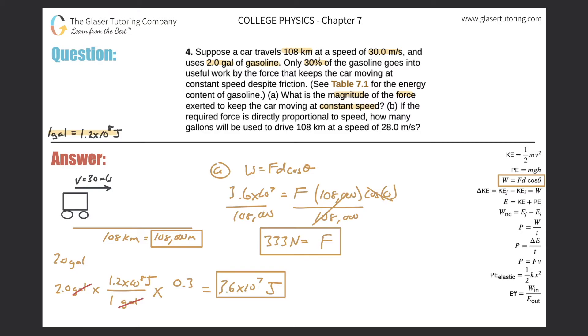Let's now take a look at letter B. So it says if the required force is directly proportional to speed, how many gallons will be used to drive 108 kilometers at a speed of 28 meters per second? So what they're saying is that force is proportional to speed. And what we're trying to do is we're trying to find how many gallons would be consumed now, if we're only going to drive 28 meters per second.